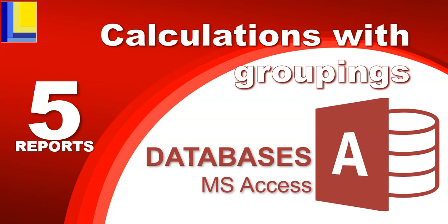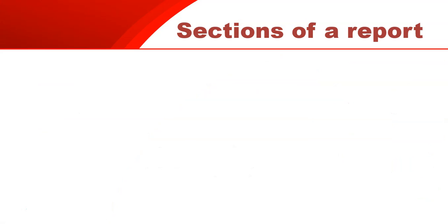This is part five of our series on databases, and particularly Microsoft Access, and we're going to be looking at how we can do calculations in groupings. If you're not sure about how to do calculations in general, go look at our video on calculations and the different types of formulas you can use, because you need to know them in order to do this. Before we get into doing the calculations in the different groupings, we need to first understand the different sections of a report and where to put the calculation depending on what information we want to get.